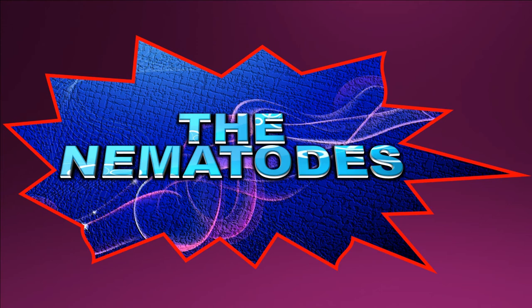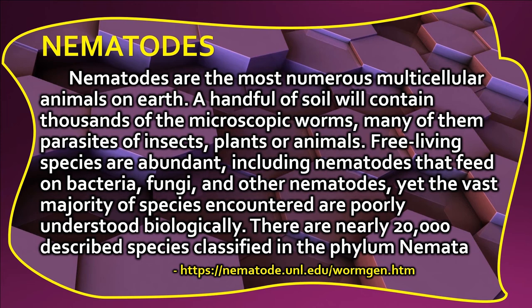Nematodes are the most numerous multicellular animals on earth. A handful of soil will contain thousands of the microscopic worms, many of them parasites of insects, plants, or animals. Free-living species are abundant, including nematodes that feed on bacteria, fungi, and other nematodes, yet the vast majority of species are poorly understood biologically. There are nearly 20,000 described species classified in the phylum Nematoda.